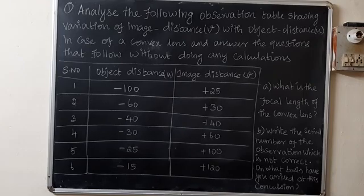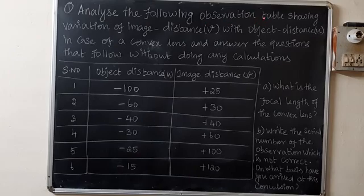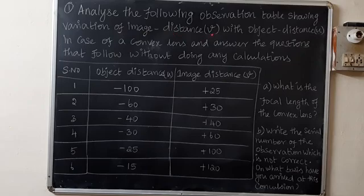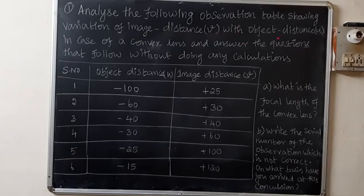The problem is to analyze the following observation table showing variation of image distance v with object distance u in case of a convex lens, and answer the questions that follow without doing any calculations.